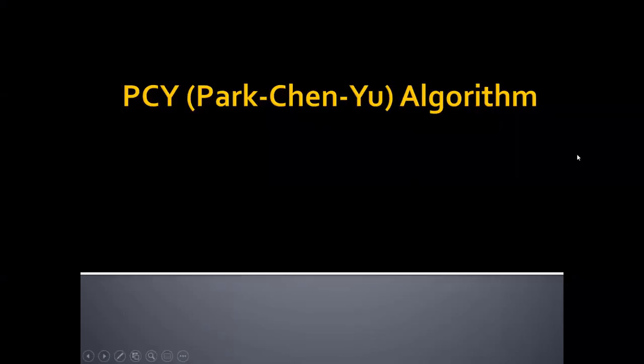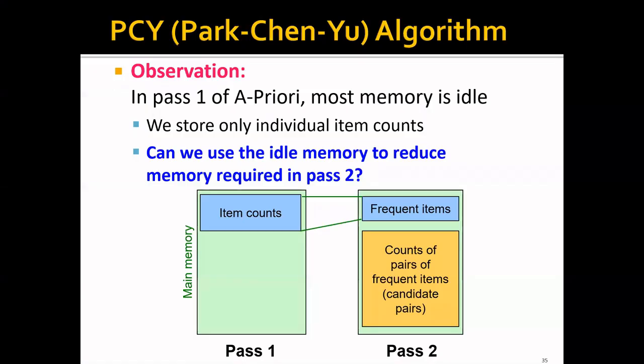Now let's move on to the PCY algorithm, which is an improvement to the A-Priori algorithm. One key observation is that in pass 1 of the A-Priori algorithm, most memory is actually idle. We store only the individual item counts, and a lot of memory is left unused. Can we use this idle memory to reduce the memory required in pass 2?